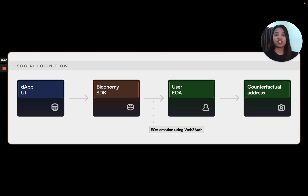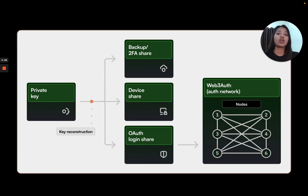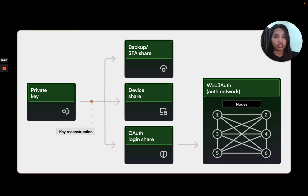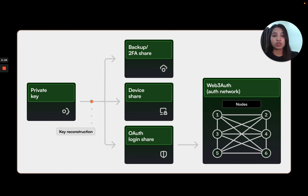Now let's take a look at the key infrastructure. With Web3Auth, users handle keys similar to a multi-factor account, where they use zero-knowledge login, devices, and other factors to manage the key pairs. In this example, the user starts by generating a two-out-of-three Shamir secret sharing scheme. This gives the users three shares, as you can see right now.